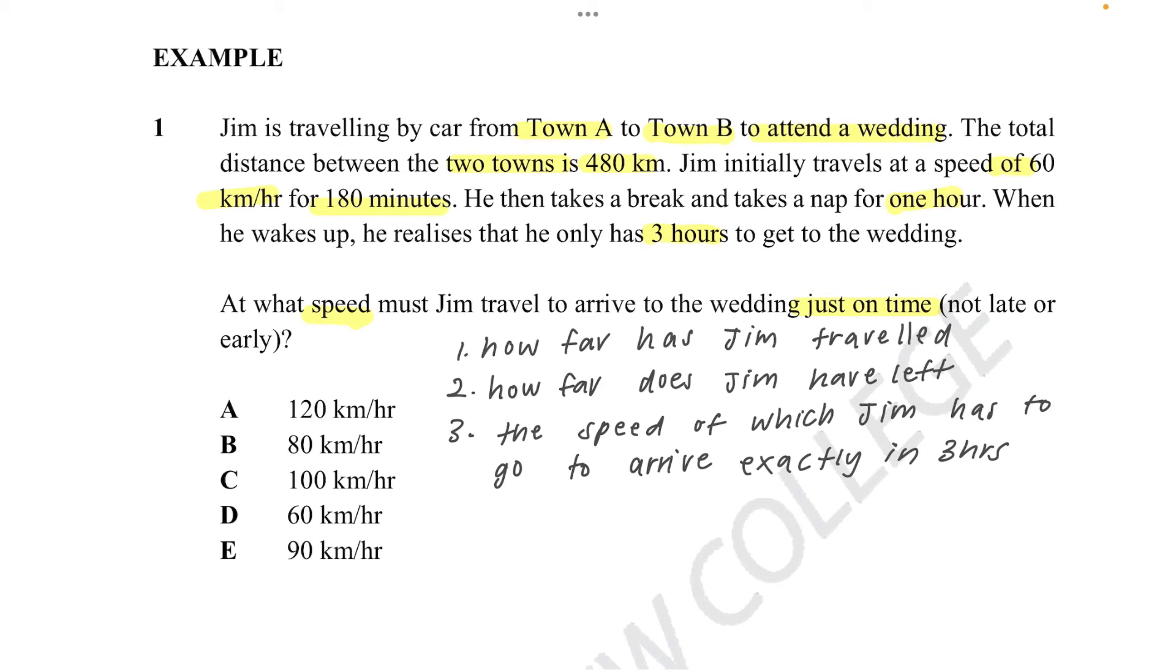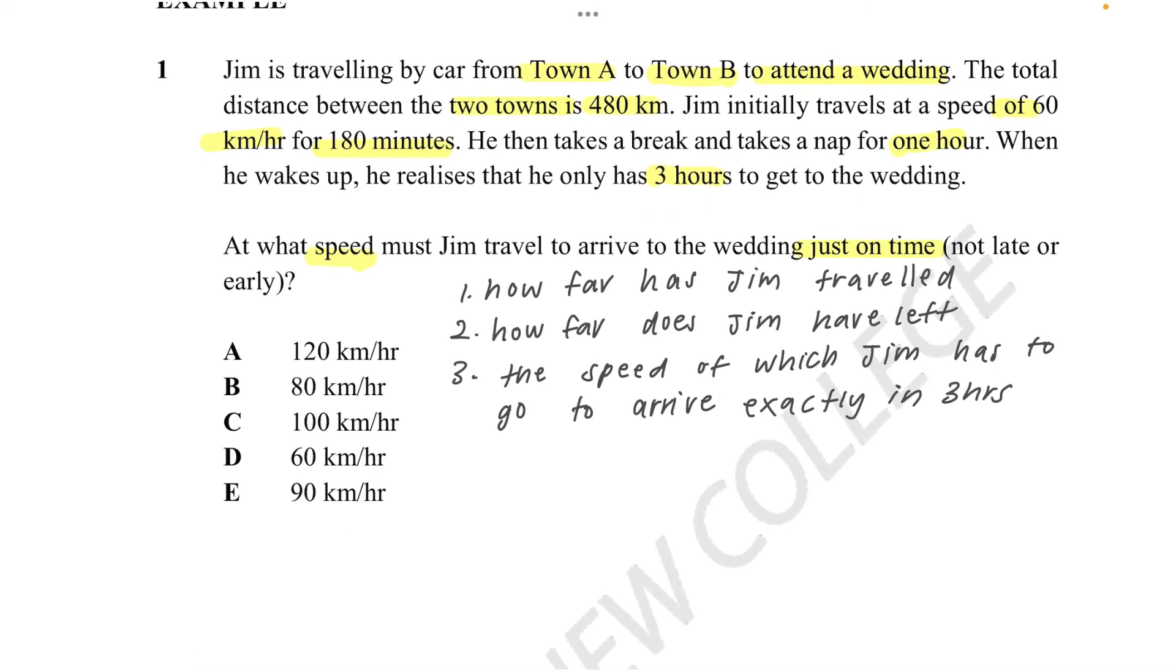So if we visualize this on a little graph, we know town A to town B is around 480 kilometers. We know he initially travels at a speed of 60 kilometers per hour for 180 minutes. Using the formula, let's show the triangle. We know distance is on top, s is on the left and t is on the right. Using the formula, we know that we're currently looking for distance. So we know distance is speed times time.